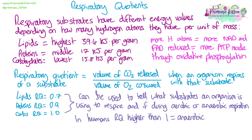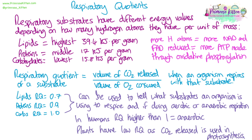In humans, an RQ value higher than 1 suggests anaerobic respiration is occurring. Plants tend to have a low respiratory quotient because the carbon dioxide released is used up in photosynthesis.